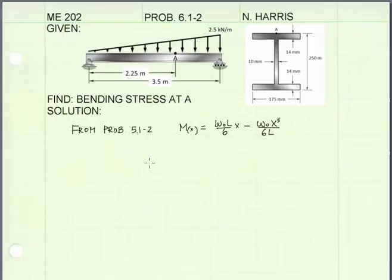Previously in problem 5.1-2 we calculated the equation for the internal moment in a simply supported beam with a triangular distributed load. We got a function for moment in terms of x as shown. We can just apply that function now to this problem to calculate the internal moment at point A.